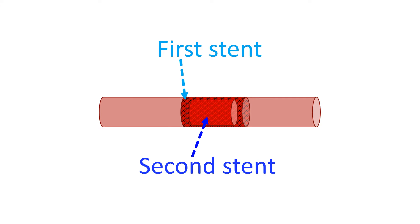One of the initial reasons to use drug coated balloons was new block occurring within previously implanted stents. Stents are tiny metallic spring-like structures implanted in blood vessels to support them after removal of blocks by inflation of a balloon in a procedure called balloon angioplasty.